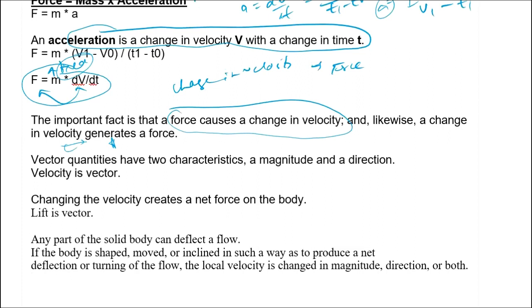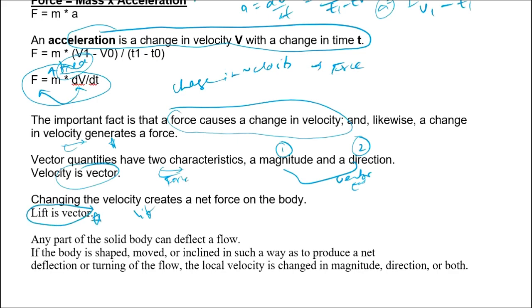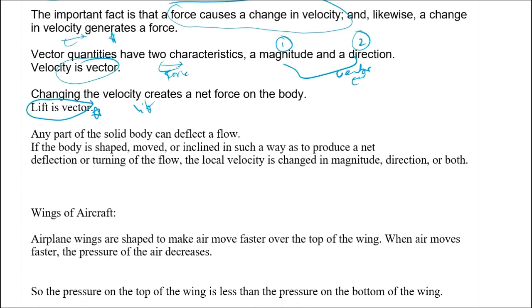Coming to vector quantities — a vector quantity has two characteristics: it has both a magnitude and a direction. Velocity is a vector. Since a change in velocity causes a force, and velocity is a vector, force is also a vector. Since lift is a force, lift is also a vector. This is important.